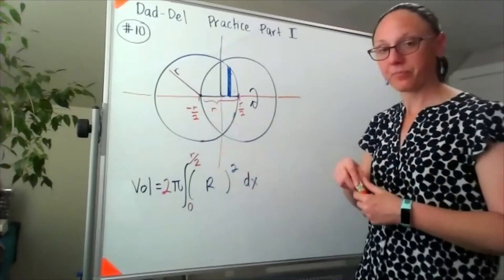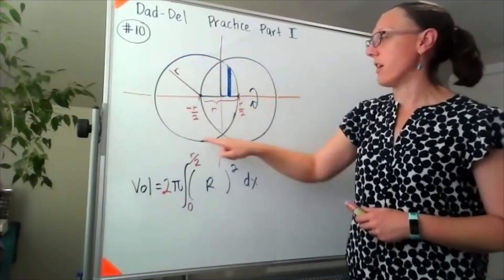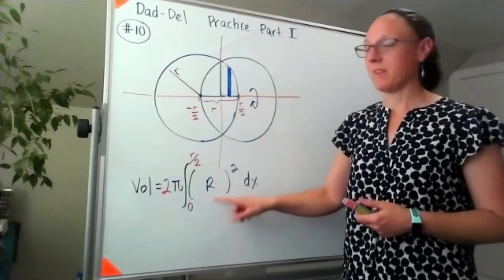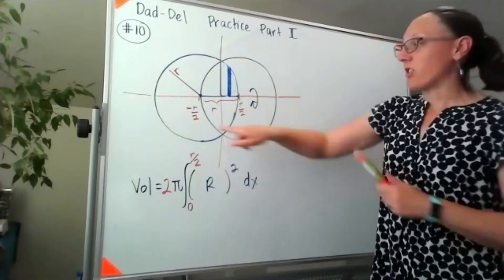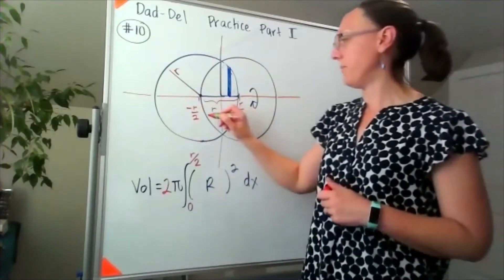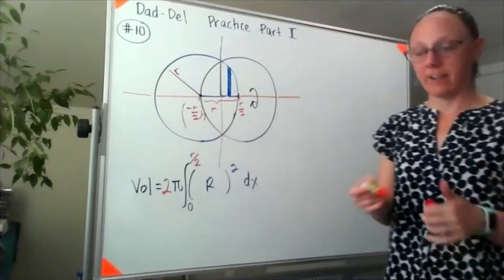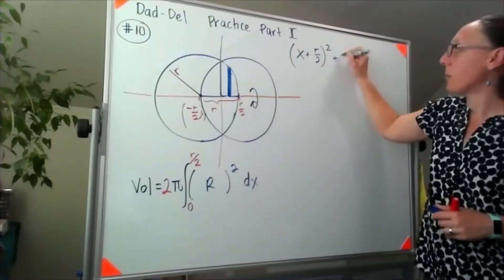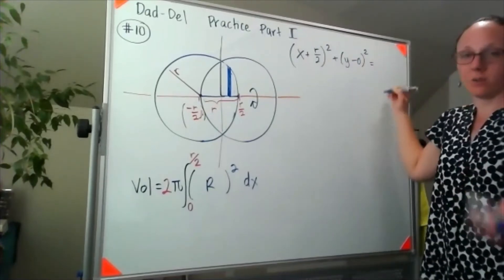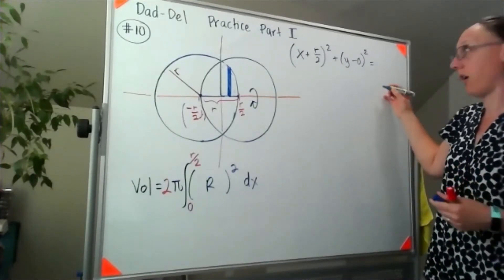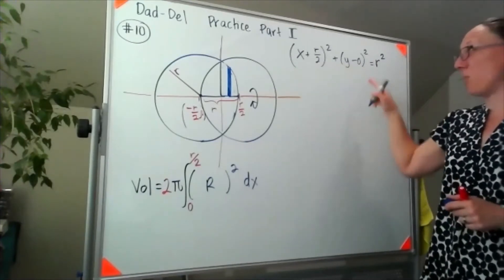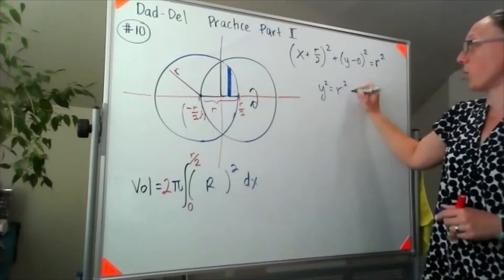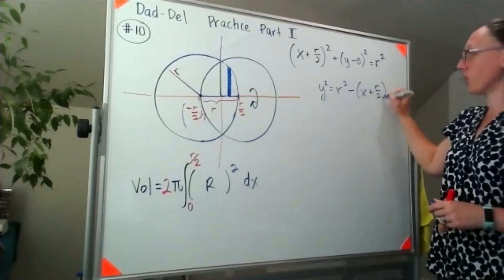That also means that the center of this circle must be at negative R/2 by symmetry, and that's going to be important because I need to know the equation of this circle on the left. That circle is centered at (−R/2, 0), so using the standard equation of a circle: x plus R/2, quantity squared, plus y minus 0 squared, equals the radius squared. In this problem we've been told that the radius equals R. That means I'm all set up to rearrange this and solve for y. If I subtract that piece over, I'd have y² = R² − (x + R/2)².